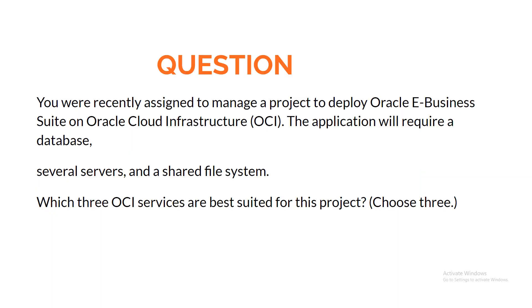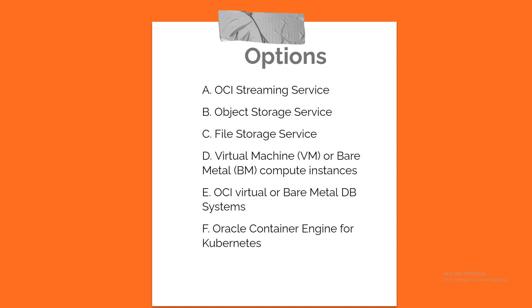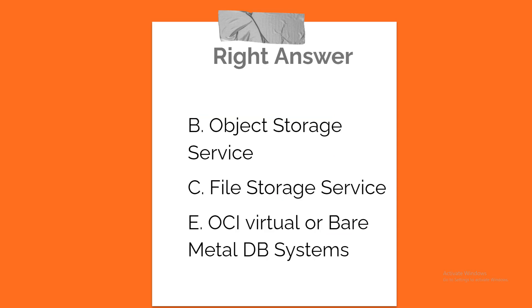Question. You were recently assigned to manage a project to deploy Oracle eBusiness Suite on Oracle Cloud Infrastructure. The application will require a database, several servers, and a shared file system. Which three OCI services are best suited for this project? Choose three. A. OCI Streaming Service. B. Object Storage Service. C. File Storage Service. D. Virtual Machine or Bare Metal Compute Instances. E. OCI Virtual or Bare Metal DB Systems. F. Oracle Container Engine for Kubernetes. Correct answer: B. Object Storage Service. C. File Storage Service. E. OCI Virtual or Bare Metal DB Systems.